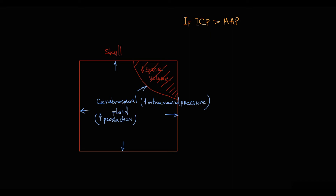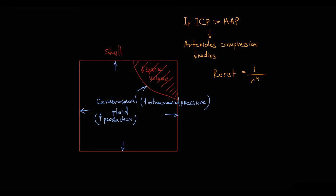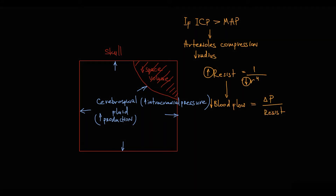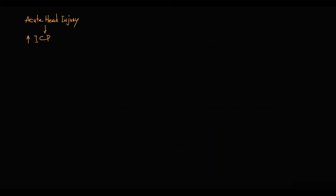The problem is that if intracranial pressure becomes greater than mean arterial pressure — essentially the average blood pressure during the cardiac cycle — cerebral arterioles become compressed. The radius of the arterioles decreases, and because resistance is inversely proportional to the fourth power of radius, resistance of cerebral arterioles increases. This increase in resistance causes a decrease in blood flow, since blood flow equals pressure difference divided by resistance.